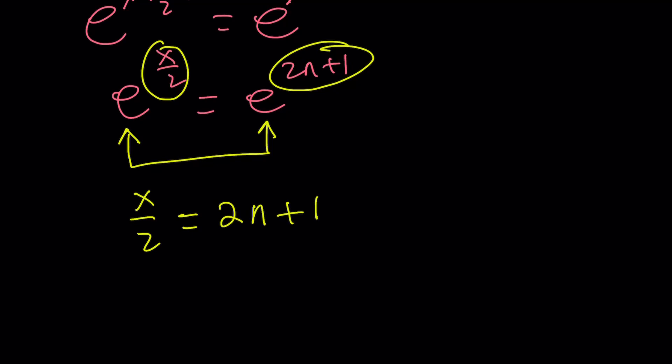So we got x over 2 equals 2n plus 1 from here. If you multiply both sides by 2, we're going to get x equals 4n plus 2. And let me not forget that n is an integer. So what's that supposed to mean?